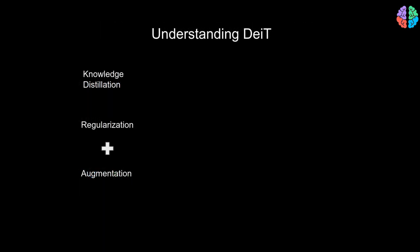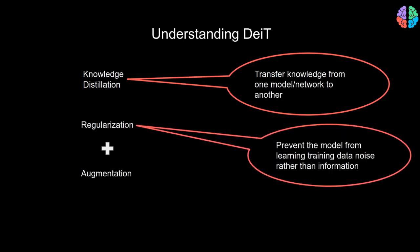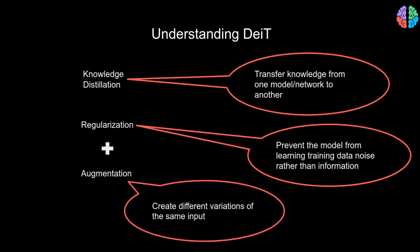To understand DeiT, we need to know Distillation, Regularization, and Augmentation. Knowledge Distillation is when you transfer knowledge from one model or network to another. Regularization is when you try to reduce overfitting of a network to limited training data, so the model learns the actual information rather than the noise. Augmentation is when we create multiple samples of the same input with some variations. Though these are all techniques used in DeiT, the key contributor is Distillation.